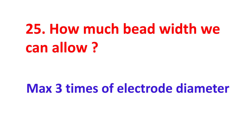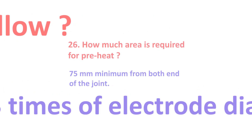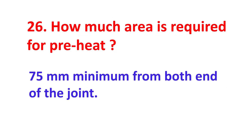How much bead width can we allow? Maximum 3 times the electrode diameter. How much area is required for preheat? 75 mm minimum from both ends of the joint.